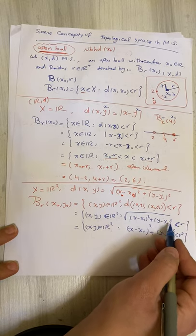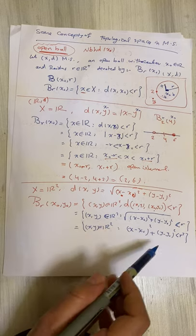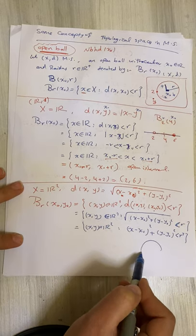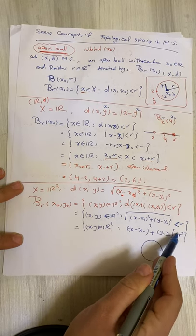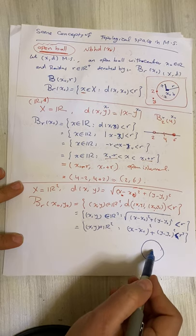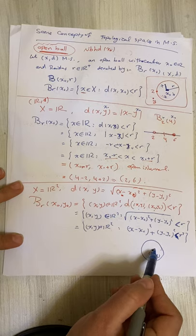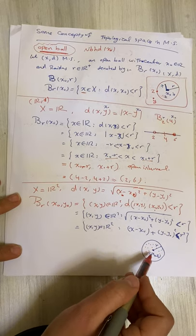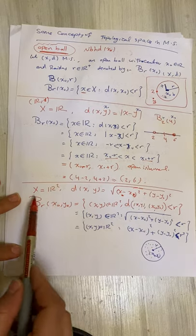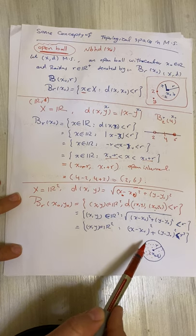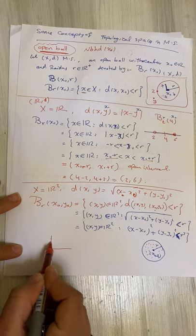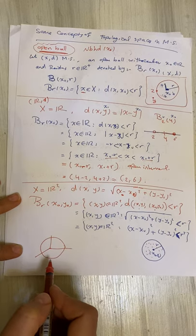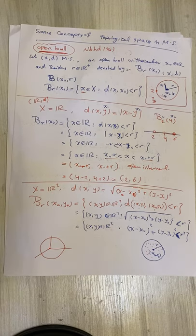Since the condition is strictly less than r² (not equal), this is the inside of a circle — not the circle itself. So in one dimension, the open ball is an open interval; in two dimensions, elements inside a circle; and in three dimensions, elements inside a ball.